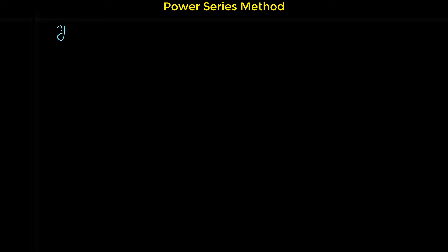In this video I'm going to show you an example of solving a second-order differential equation with the power series method. The given differential equation is y double prime plus y equals 0. This is a relatively simple second-order differential equation and probably you know the solution is c1 cosine x plus c2 sine x. But here we want to find the solution with the power series method.